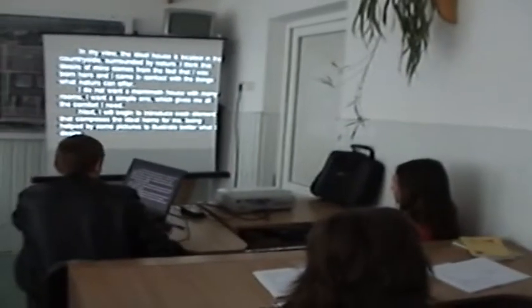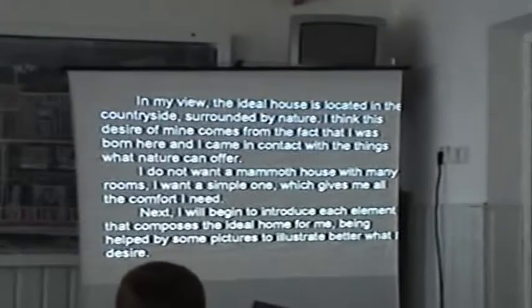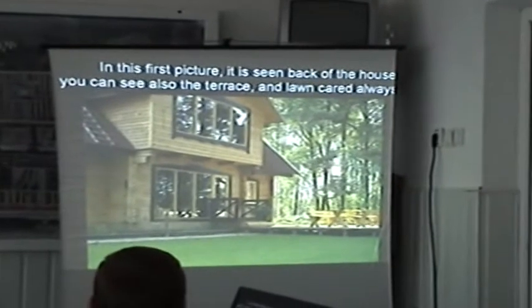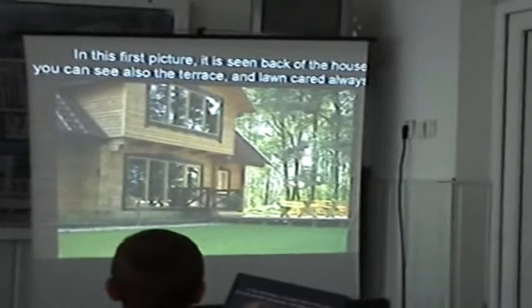In my view, the ideal house is located in the countryside, surrounded by nature. I think this desire of mine comes from the fact that I was born here and grew up in contact with what nature can offer. I do not want a huge house with many rooms. I want a simple one which gives me all the comfort I need. I will now introduce each element that composes the ideal home for me, supported by some pictures to illustrate what I desire. In this first picture, you can see the back of the house. You can also see the terrace and the lawn, which is always green.